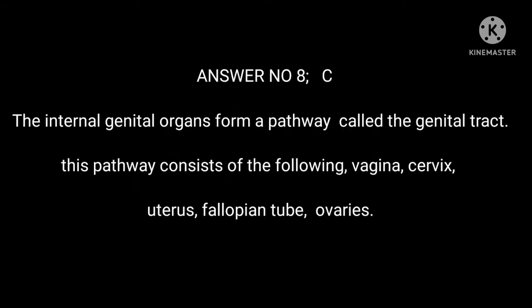Answer number 8: C. The internal genital organs form a pathway called the genital tract. This pathway consists of the following: vagina, cervix, uterus, fallopian tube, and ovaries.